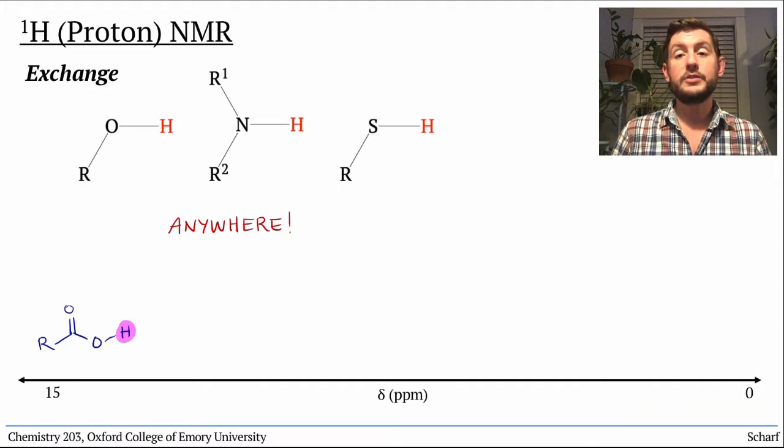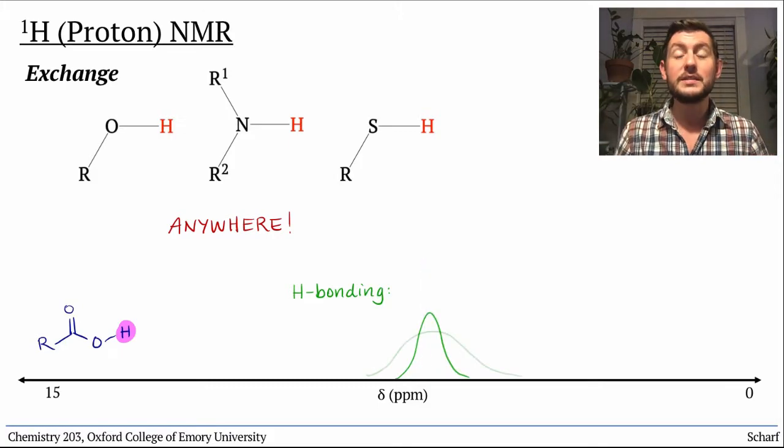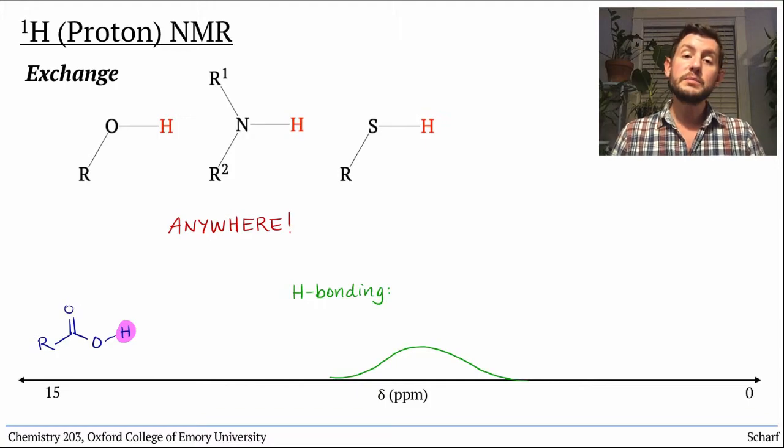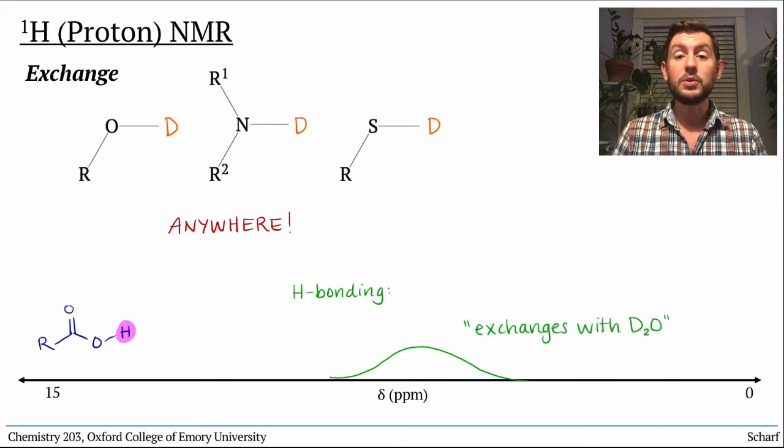All of these types of hydrogen atoms can participate in hydrogen bonding, which tends to broaden the peaks just as it did in IR spectra. They are sometimes identified by adding heavy water, D2O, to a sample. This tends to replace these protic peaks with deuterium, thereby making the peaks disappear. This is called exchange with D2O.